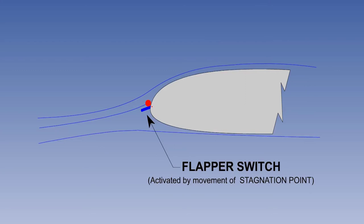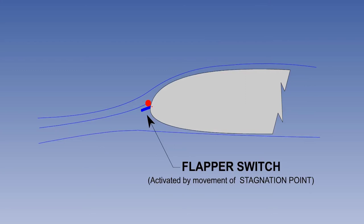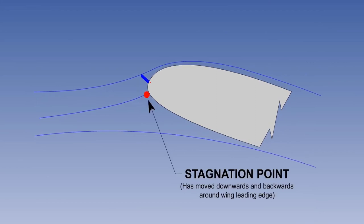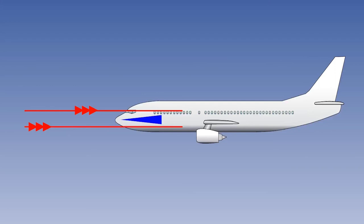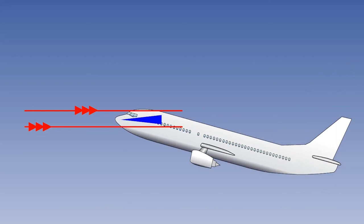Artificial stall warning devices can receive their signals from a variety of detectors, all of which are activated by changes in angle of attack. The leading edge stall warning vane or flapper switch, usually used on small and medium-sized aircraft, is positioned so that at normal angles of attack the airflow holds it down. But as angle of attack increases, the stagnation point moves down and back around the leading edge, and the change in pressure raises the switch, making the contact. The alpha vane is mounted on the side of the fuselage and trails in the relative airflow. The fuselage effectively rotates around it, and the vane thus senses the angle of attack. The stick shaker is activated at the appropriate alpha value.